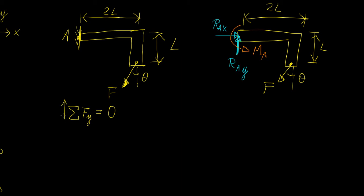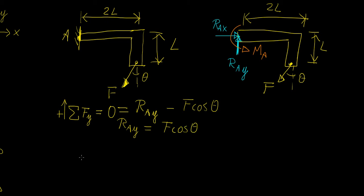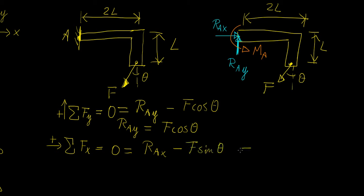Starting with the sum of forces in the y direction equals zero: the reaction force RAY upward minus the vertical component F cosine θ equals zero, so RAY equals F cosine θ. For the sum of forces in the x direction equals zero: RAX minus the horizontal component F sine θ equals zero, so RAX equals F sine θ. These give us two reaction forces in terms of the known external parameters theta and F.